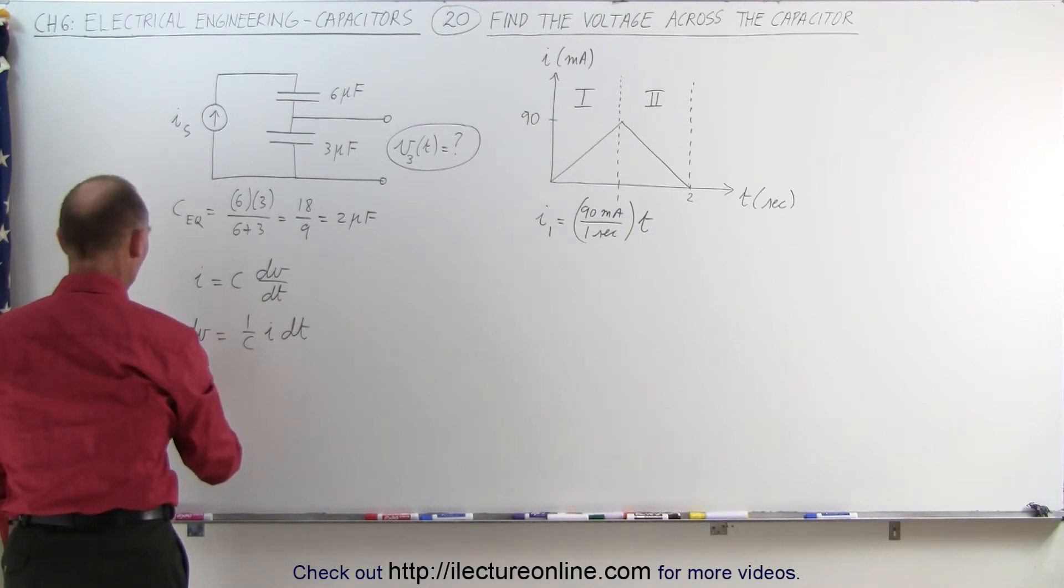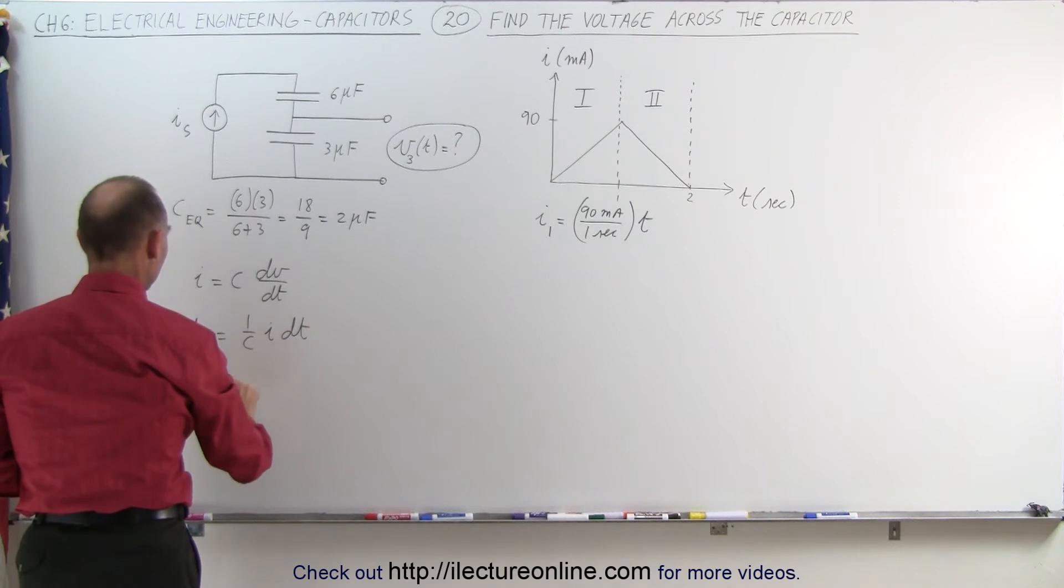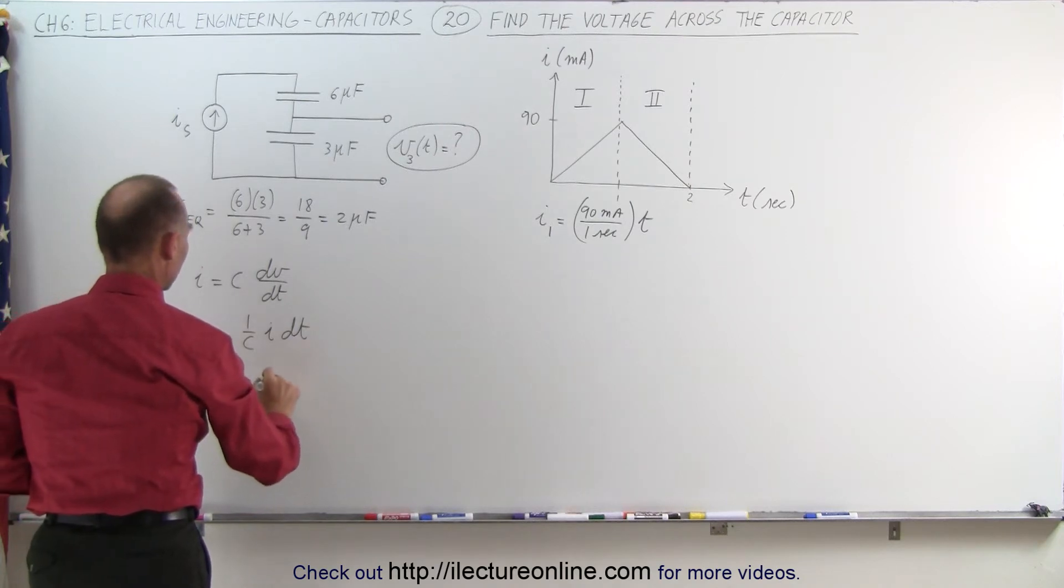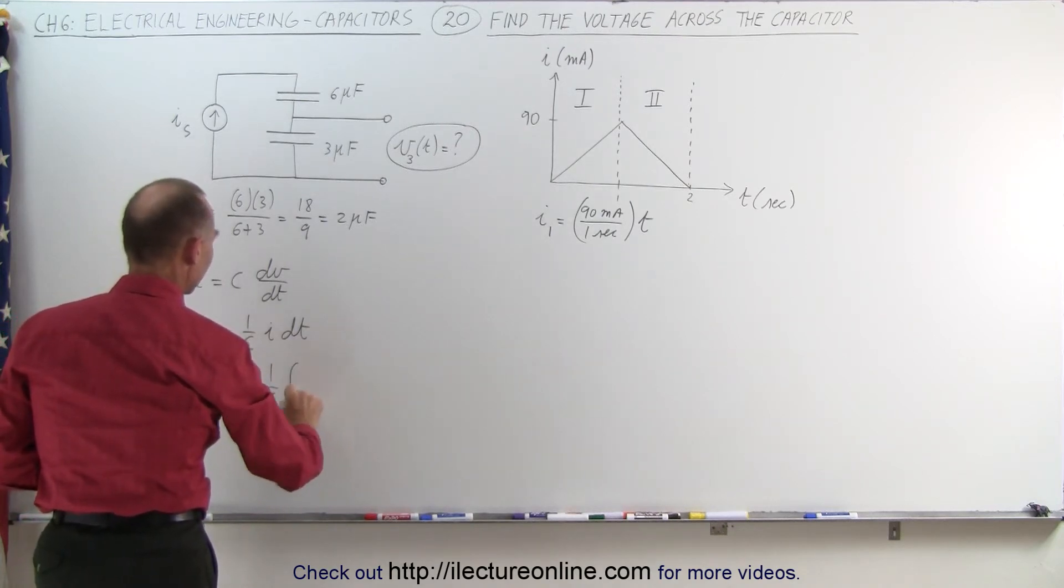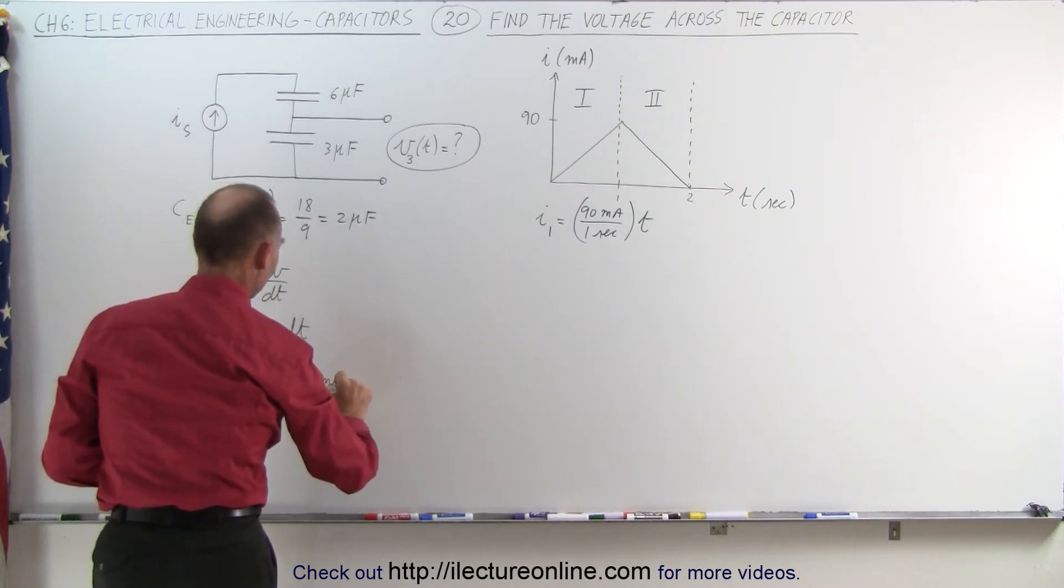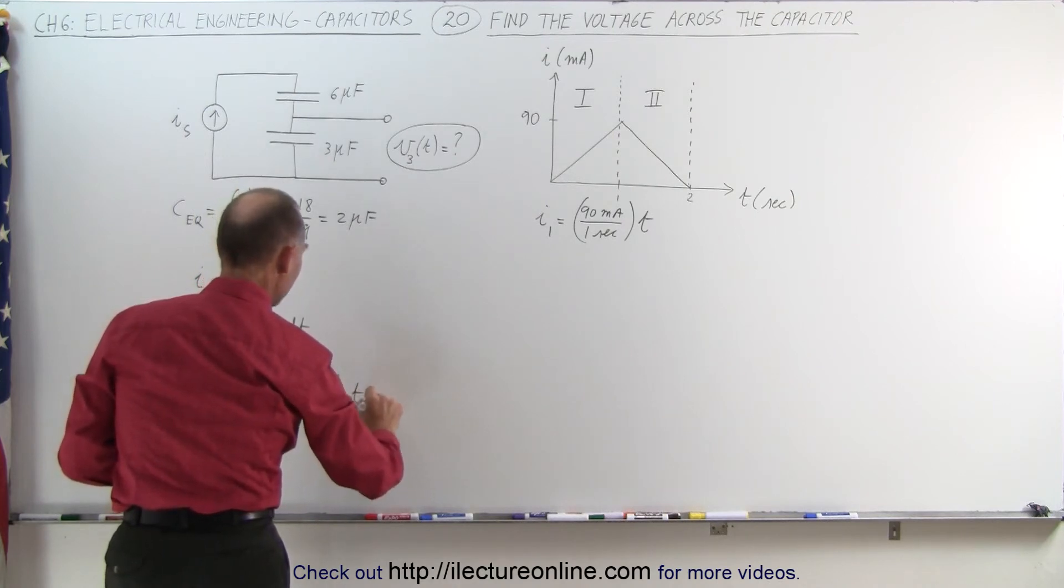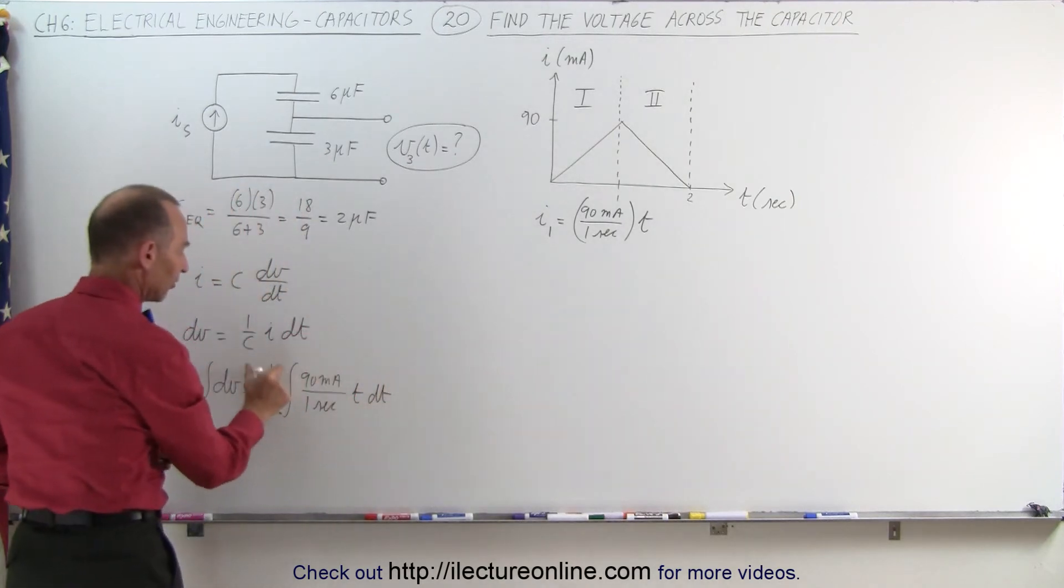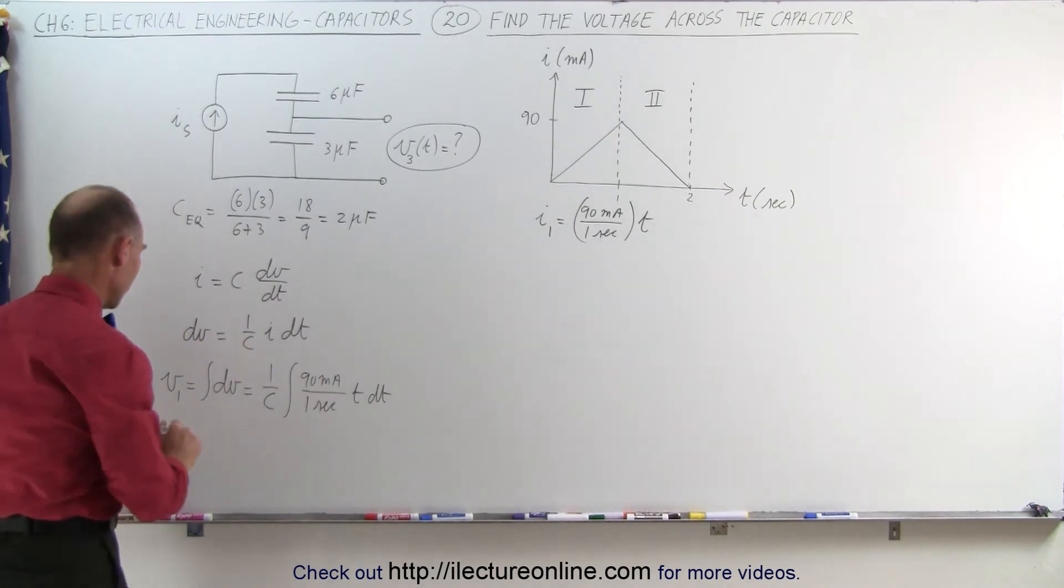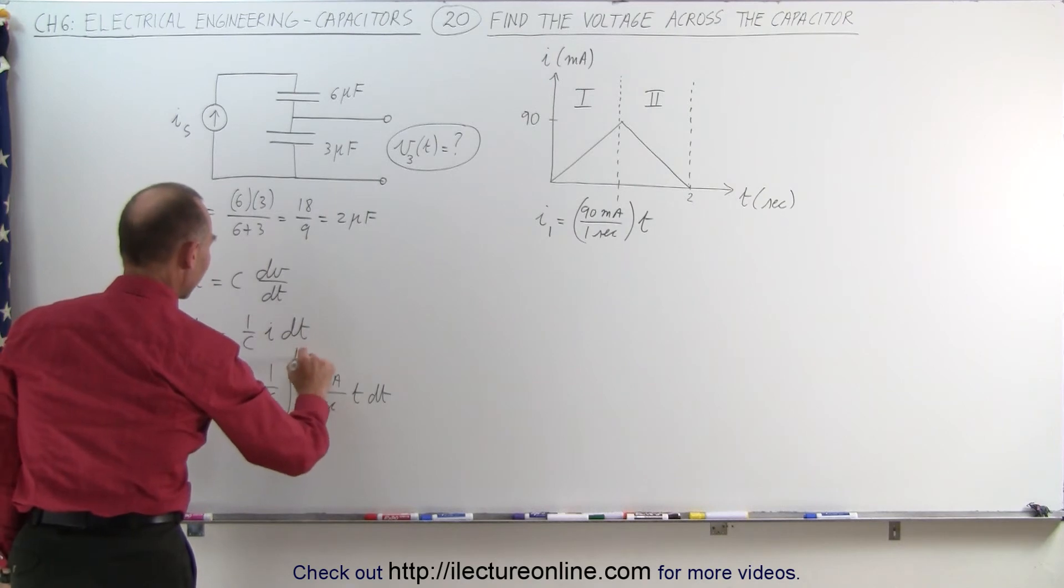That can go into I1 here because we're doing region 1, so we say that voltage 1 in region 1 is equal to the integral of dV, which is equal to 1 over C times the integral of I, which is 90 milliamps, divided by 1 second, times T dt. Of course, this constant could come outside the integral sign, which means that V1 is equal to, and we're going to integrate from 0 to 1 second.